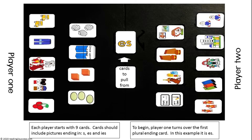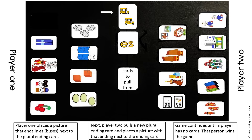To begin, player 1 turns over the first plural ending card. In this example, it is es. Player 1 places a picture that ends in es — buses — next to the plural ending card. Next, player 2 pulls a new plural ending card and places a picture with that ending next to the ending card. The game continues until a player has no cards left. That person wins the game.